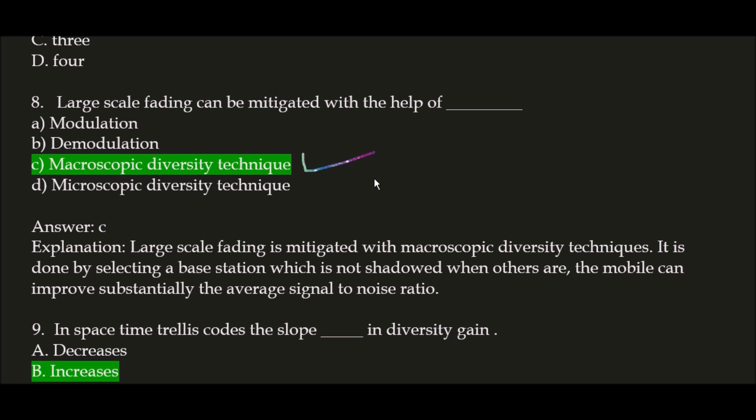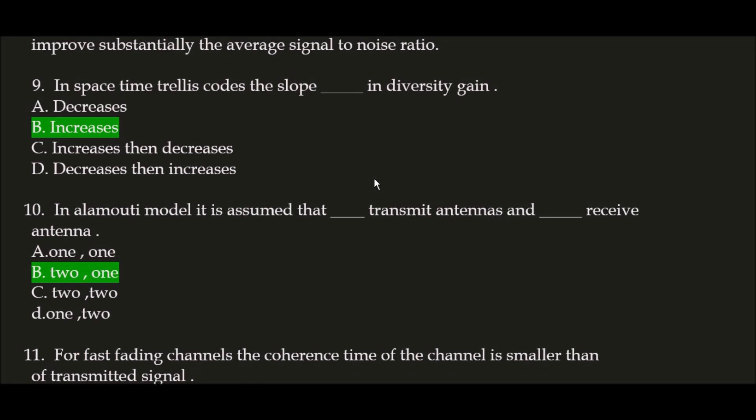The mobile can improve substantially the average signal-to-noise ratio (SNR). Next question: in space-time trellis codes, the slope in diversity gain — correct answer is option B — increases. In space-time trellis codes, the slope increases in diversity gain.